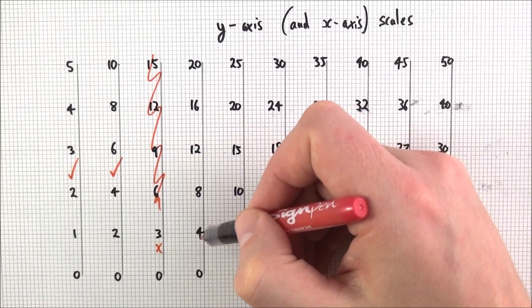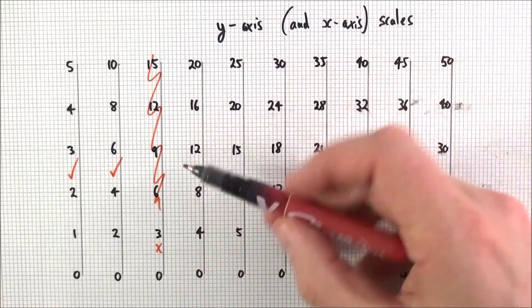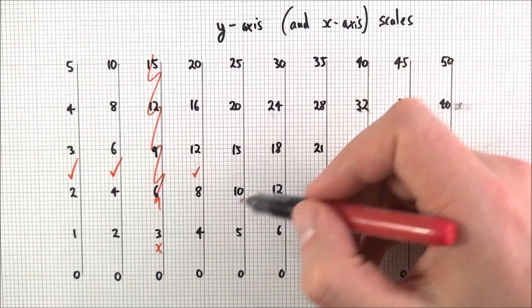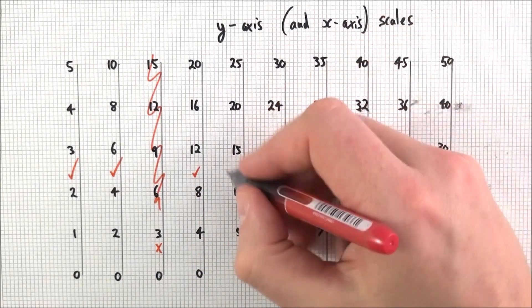I guess you can go up in 4, so you might go 4, 8, 12, 16, because this is just double this one so this is kind of okay. You can also go up in 5, so 0, 5, 10, this one here is good.